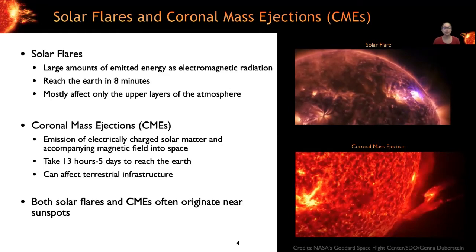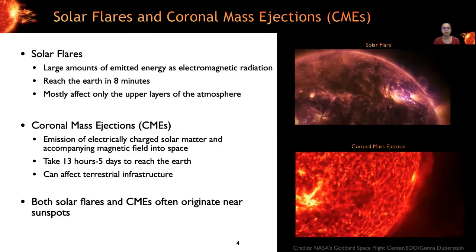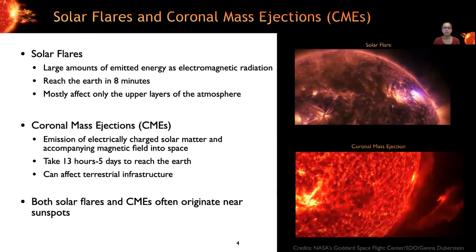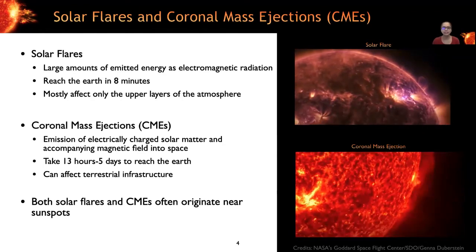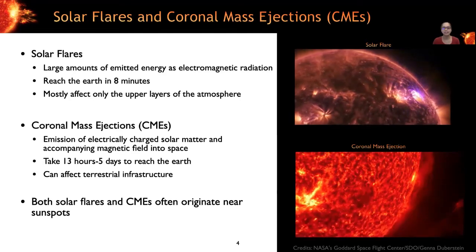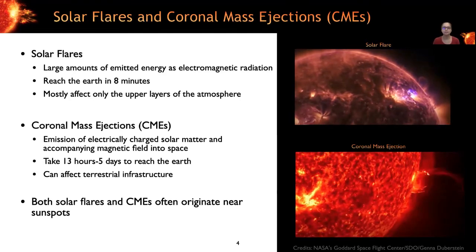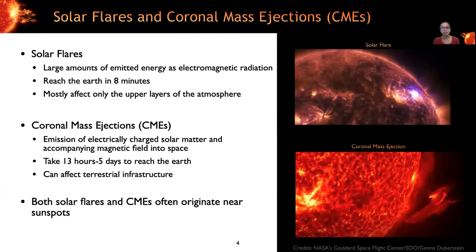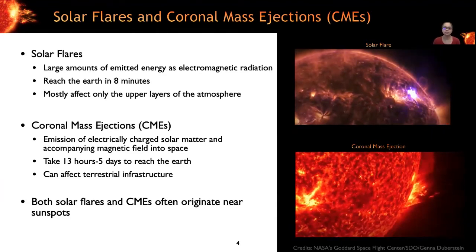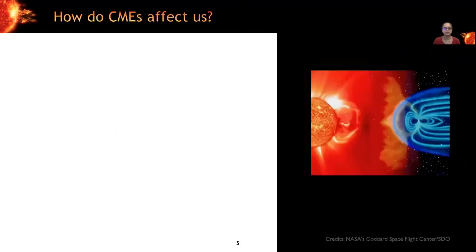Coronal mass ejections involve emission of electrically charged solar matter and accompanying magnetic field into space. And these CMEs can take anywhere from 13 hours to five days to reach the Earth based on their speed. And these CMEs are capable of causing significant damages to terrestrial infrastructure. So this paper focuses on CMEs and we'll discuss their impact more closely soon. Another point to note is that both solar flares and CMEs often originate near sunspots, which are temporary dark spots on the sun caused by concentration of magnetic field flux on its surface. And so when the number of sunspots increases, there's a higher probability of CMEs occurring.